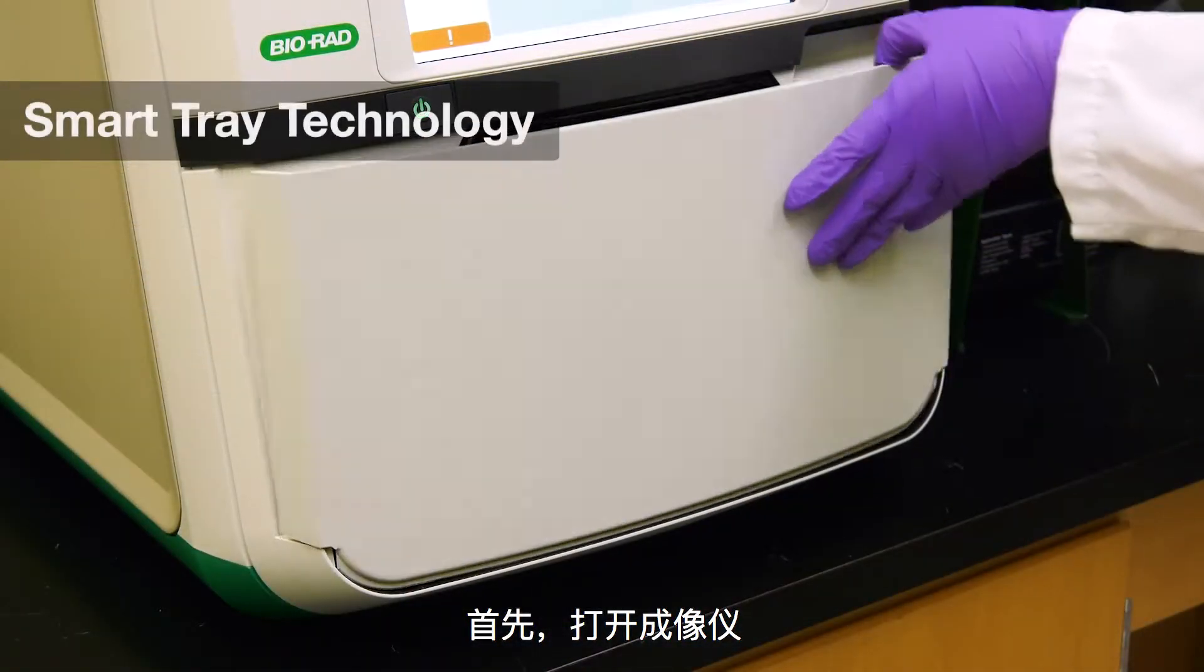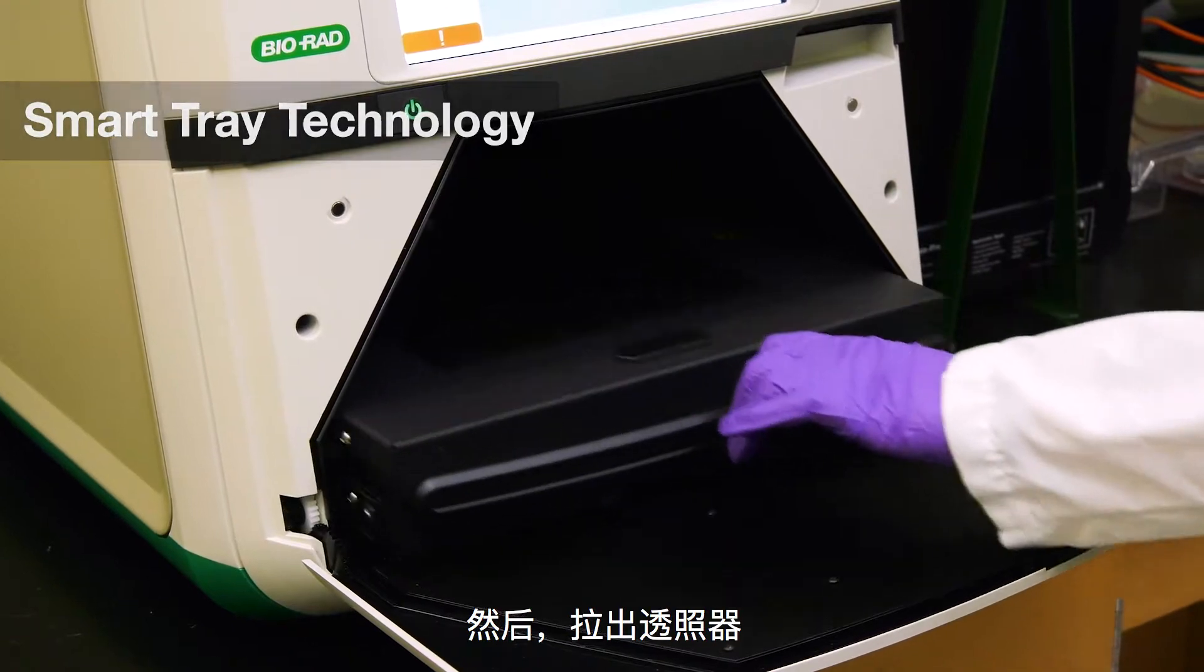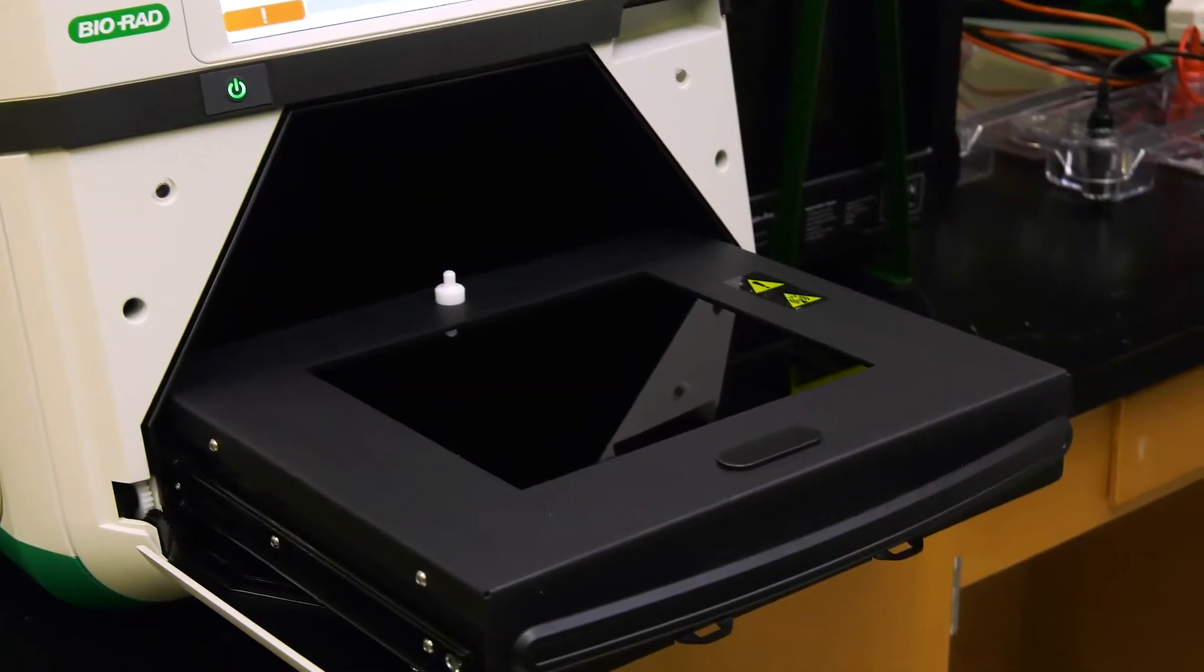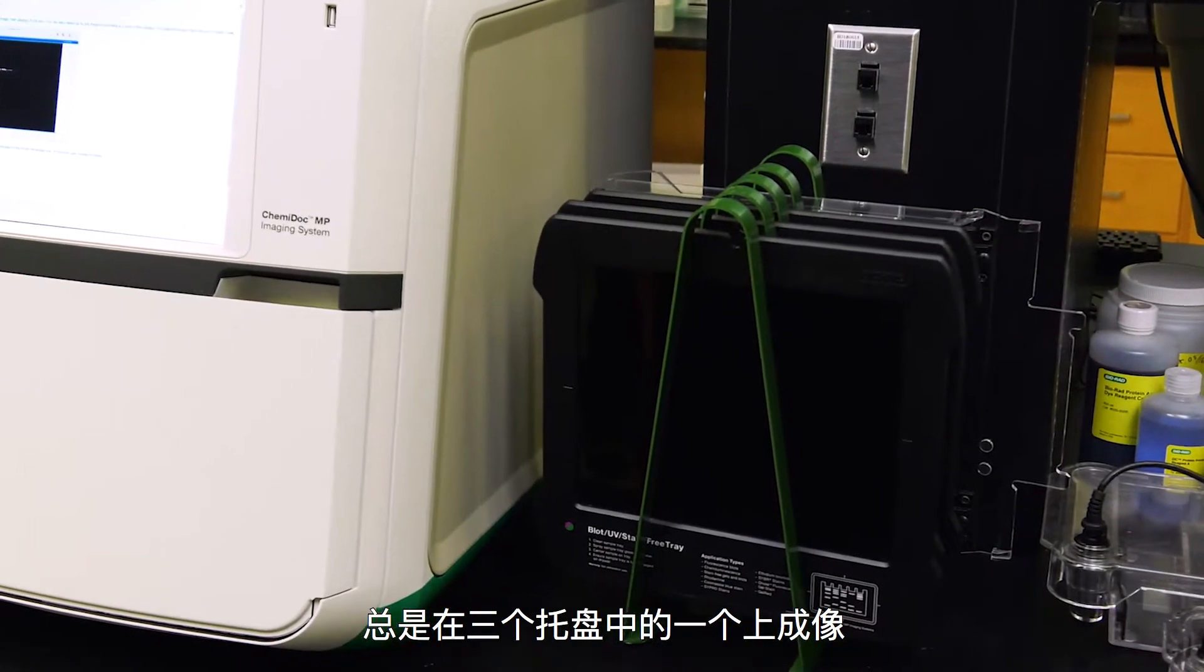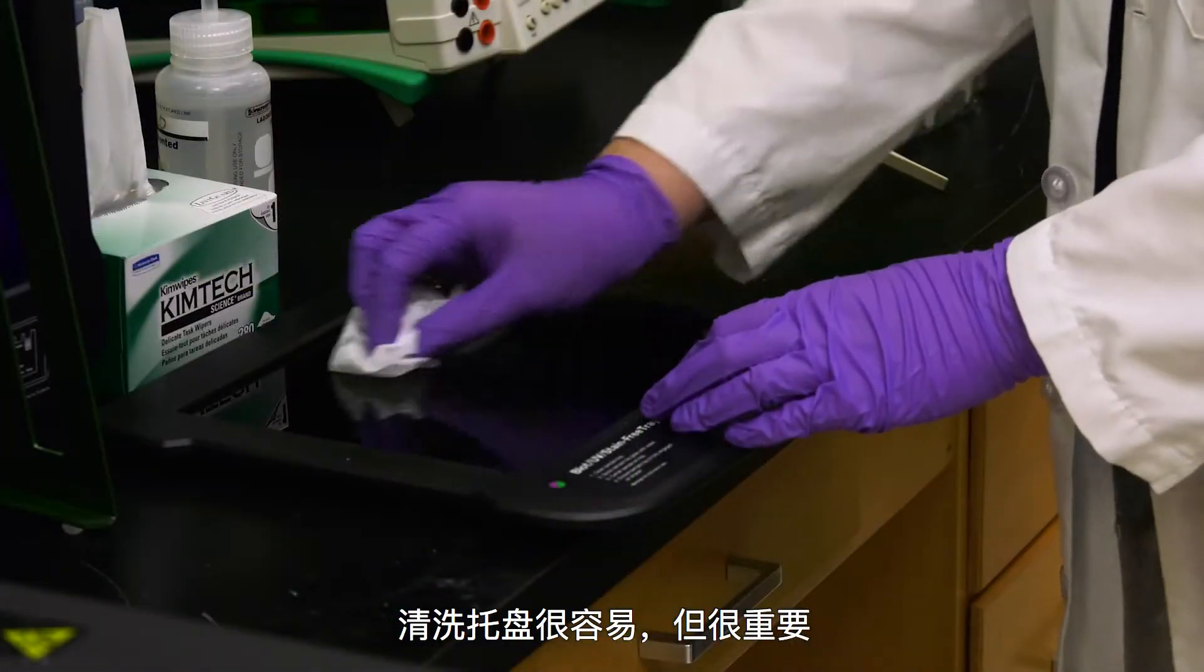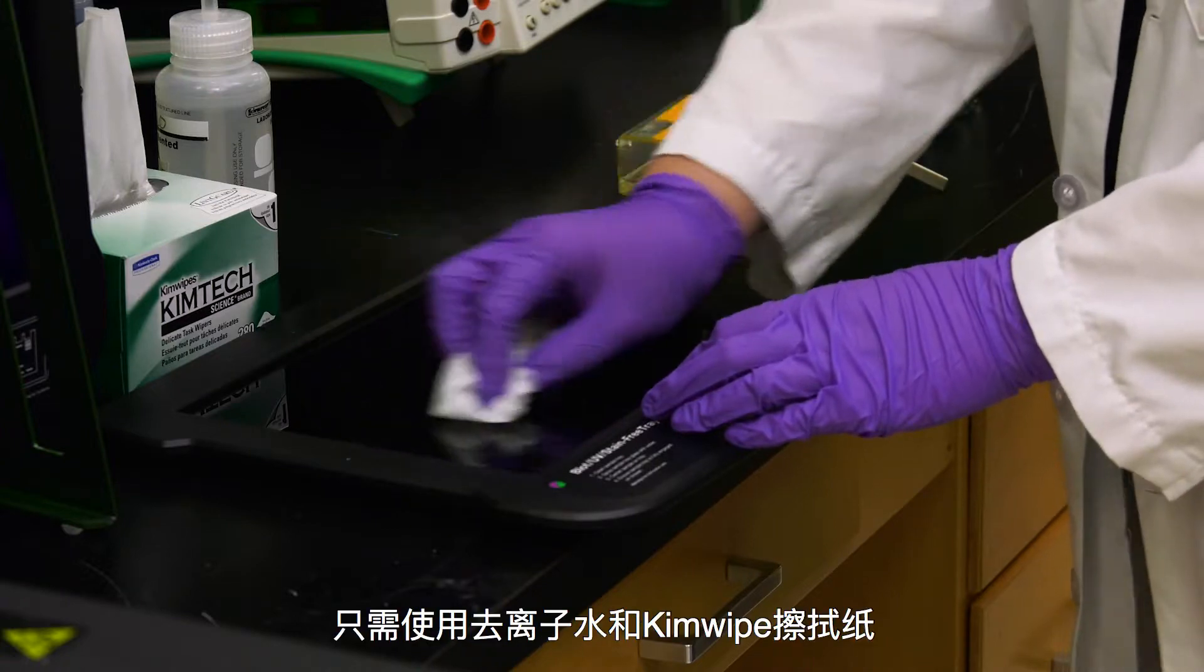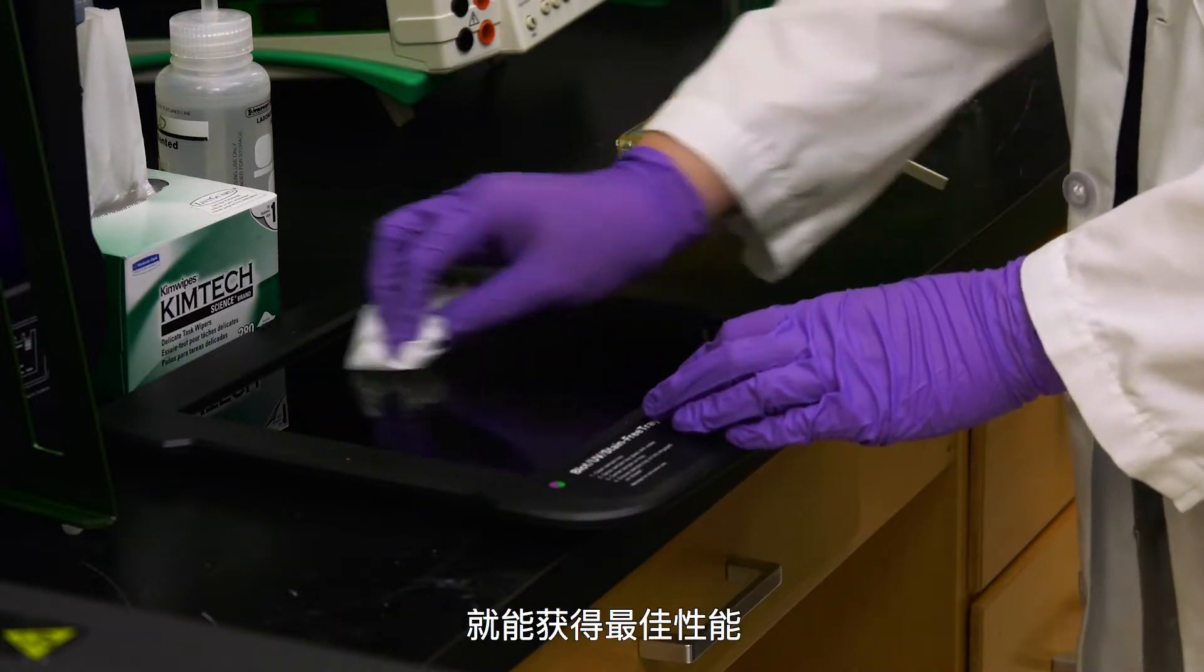To begin, open the imager and pull out the transilluminator. Remember that all gels and blots are always imaged on one of three trays. It is easy but important to clean the trays. Simply use DI water and a Kim wipe for the best performance.